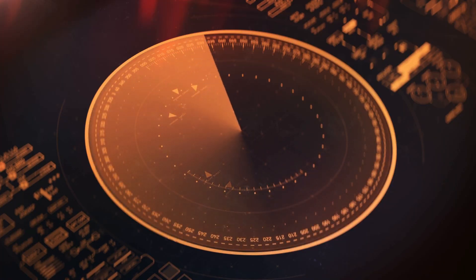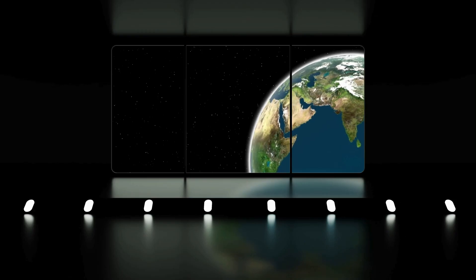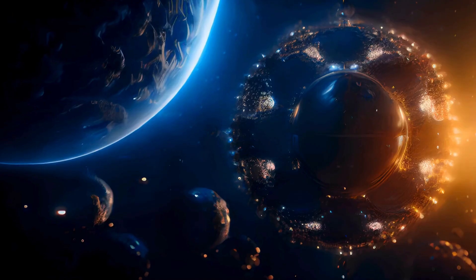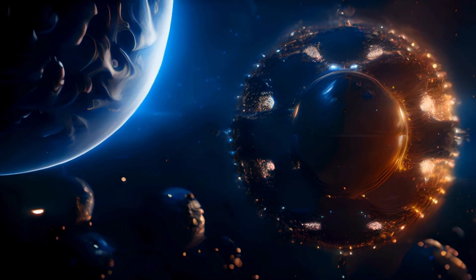The lights detected on Proxima b could mean that not only is there life on this distant world, but that there could be a highly advanced civilization, one that, like us, has learned to produce artificial light to illuminate their cities at night.